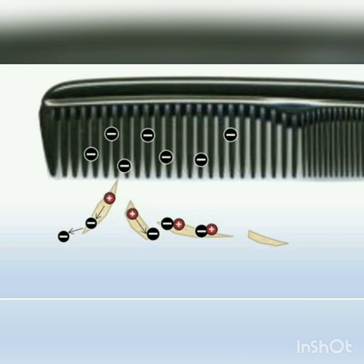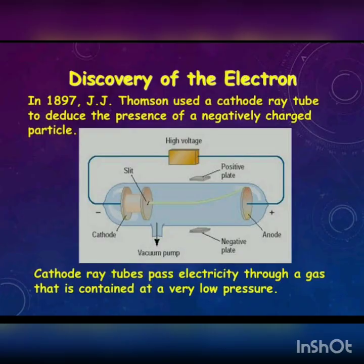In today's revision video, we will describe how these charged particles were discovered. Today we are going to discuss the discovery of the first charged particle, that is the electron. The electrons were discovered in 1897 by the scientist J.J. Thomson. In this experiment, J.J. Thomson used a discharge tube in which he put gas at lower pressure.